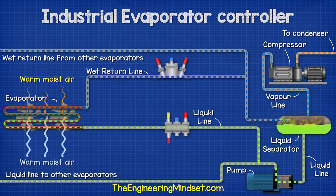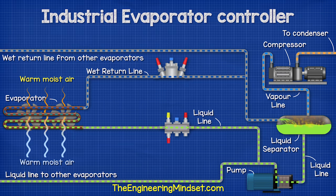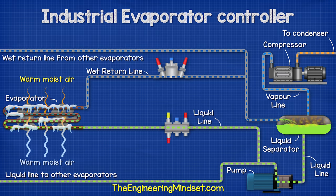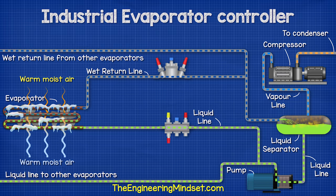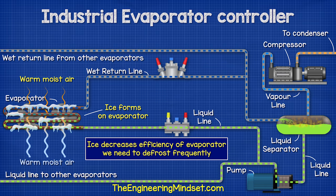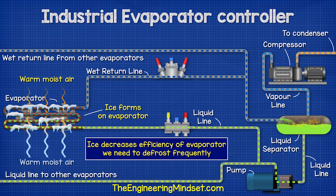From the liquid separator, the liquid flows back to the pump while the vapor flows back to the compressor. This is our basic cooling circuit for the evaporator — the refrigerant is pumped through the circuit to remove unwanted heat and provide cooling. Due to the temperature difference between the air and the refrigerant, moisture in the air condenses and freezes to the surface of the heat exchanger, decreasing its efficiency. So every so often we need to defrost the evaporator.